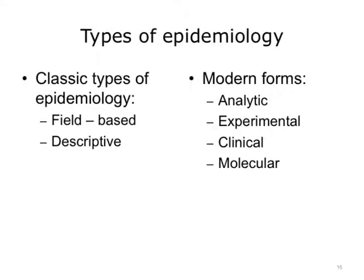As we progress in understanding epidemiology, we begin to see how information tools in public health are important in examining issues in population health. Examining issues through epidemiological studies means applying research in different ways to solve different types of problems. Epidemiological studies come in many different forms. The two classic types include field-based and descriptive, whereas more modern forms include analytical, experimental, clinical, and molecular. Next, we will explore clinical epidemiology more in depth.